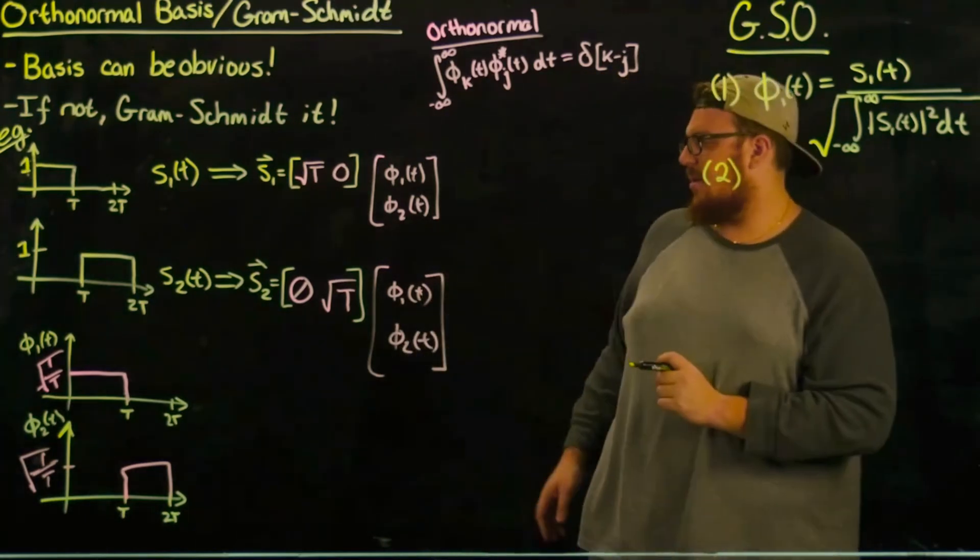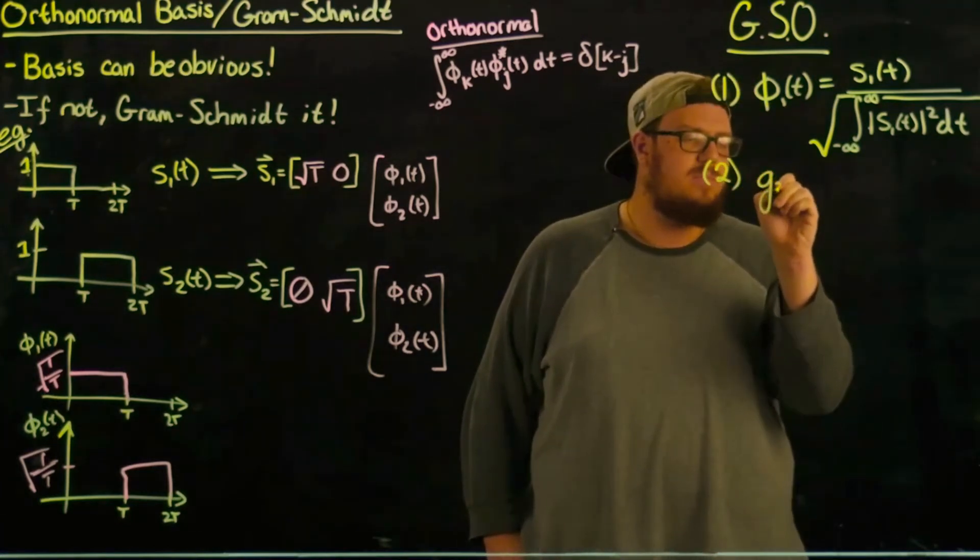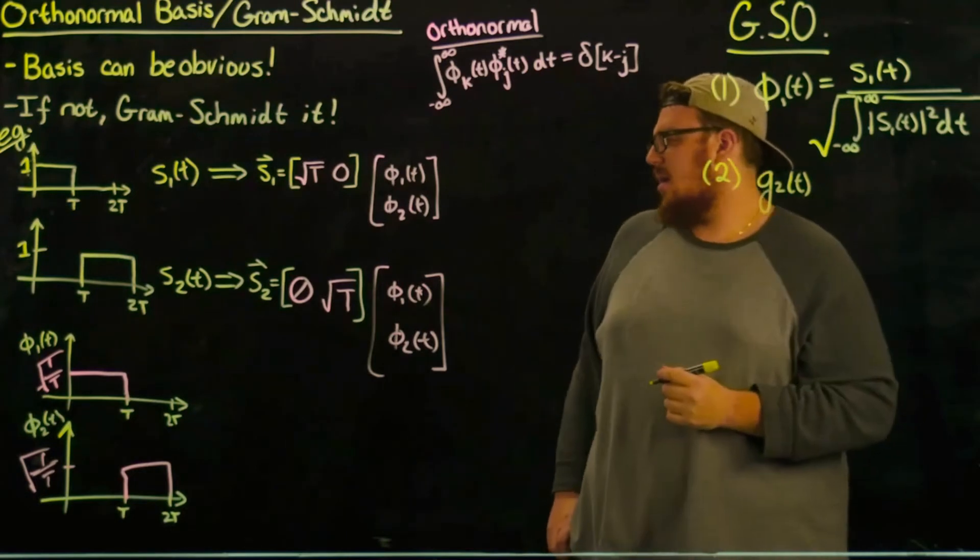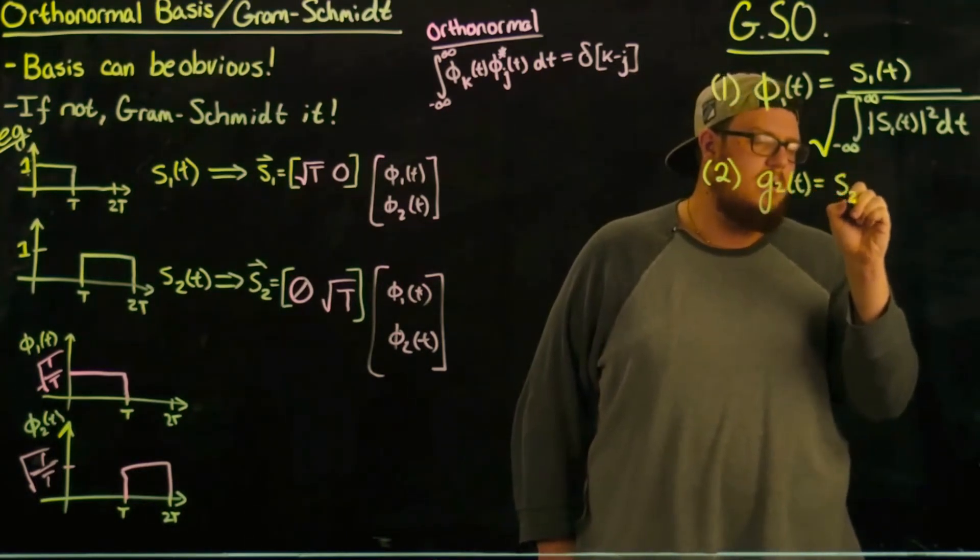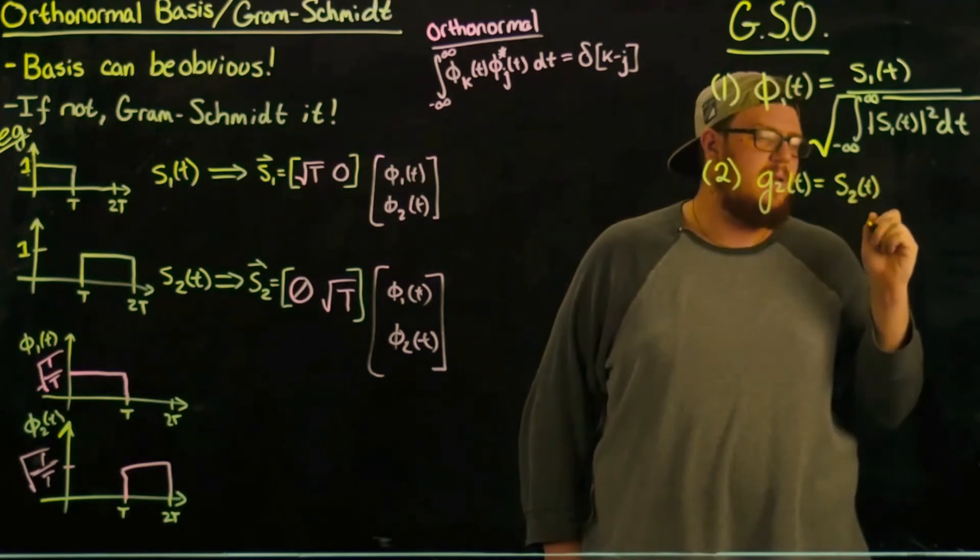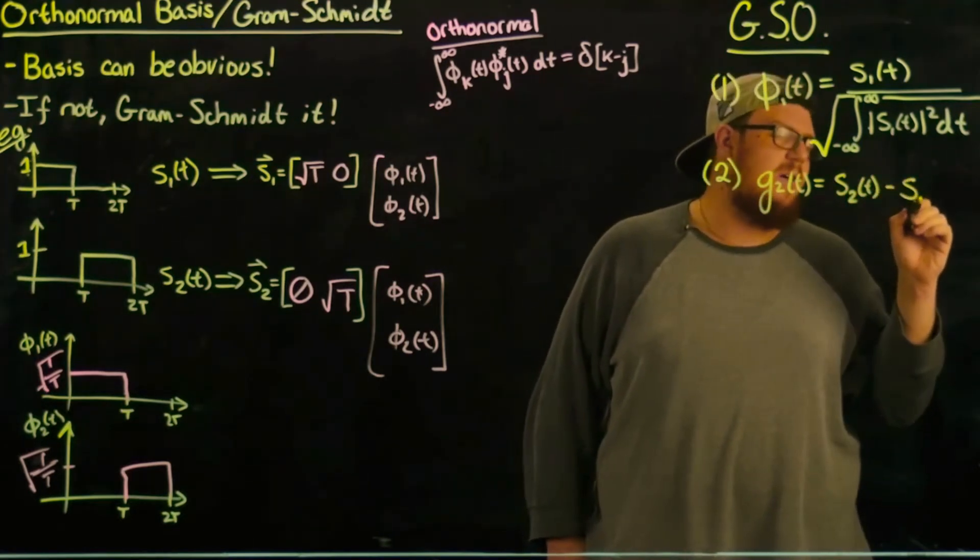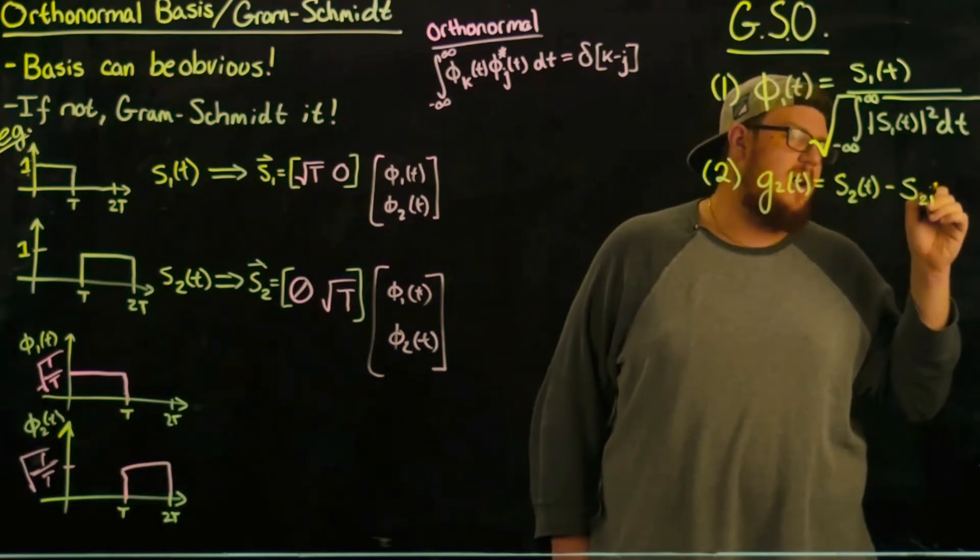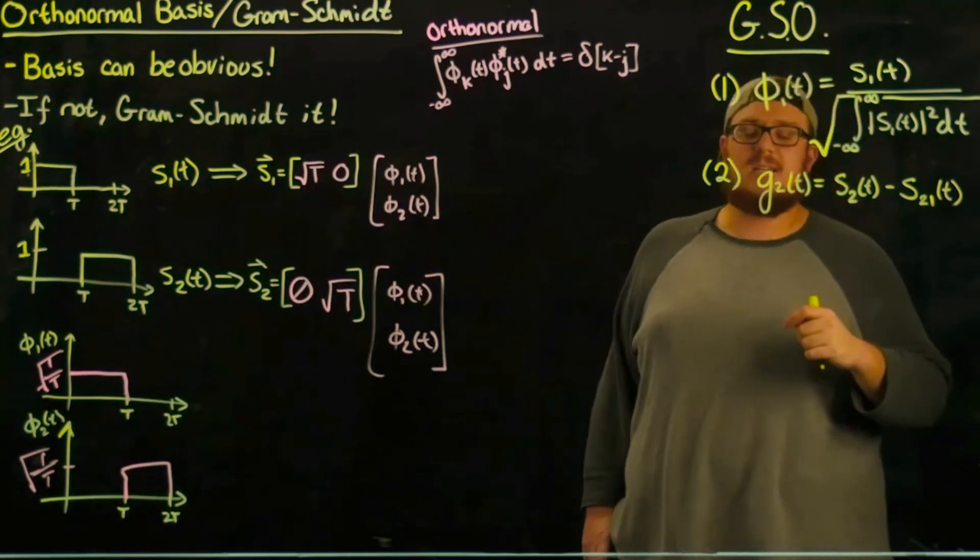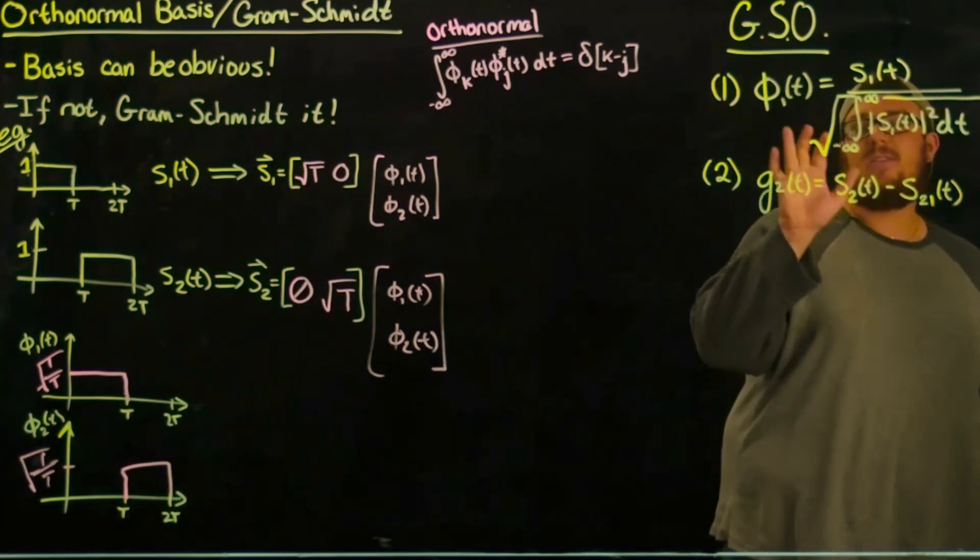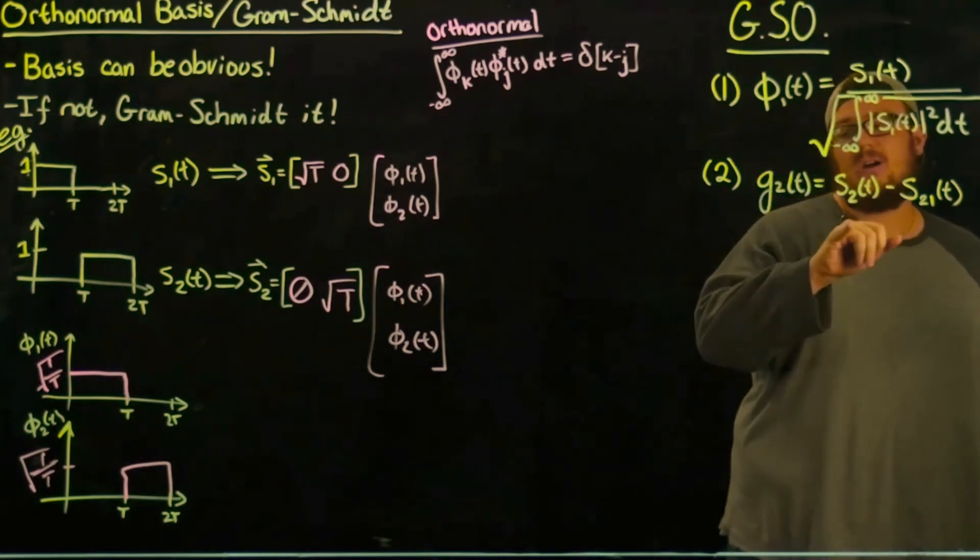Then for the second process, you set g_2(t) and you take the subtraction of s_2(t) minus the projection of s_2 onto the first basis φ_1(t). So basically you take the amount of s_2 in the direction of φ_1 and subtract it off.